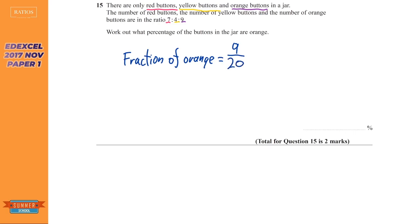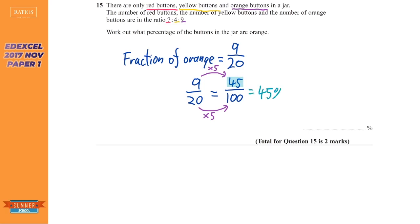Seven plus four plus nine is 20. Now we need to convert that into a percentage. On a non-calculator paper, which this is, if you have a fraction get the bottom to 100. What do I times 20 by to get to 100? Times it by five. With fractions, whatever you do to the bottom you've got to do to the top, so nine times five is 45.